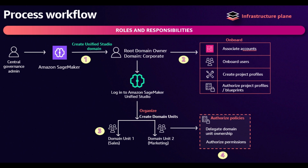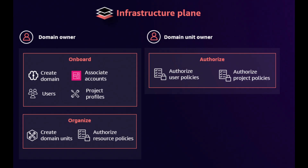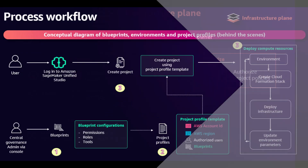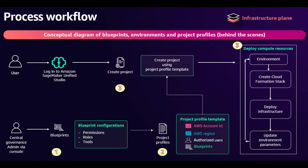From an administrative perspective, implementing SageMaker Unified Studio involves onboarding users, configuring project profiles, and setting up blueprints for infrastructure provisioning. Admins also organize business units into domain units, ensuring structured asset management and data isolation. Authorization of user roles and access controls is a key responsibility, ensuring secure and efficient project execution. The deployment workflow streamlines infrastructure setup using AWS CloudFormation blueprints, automating the provisioning of compute resources.